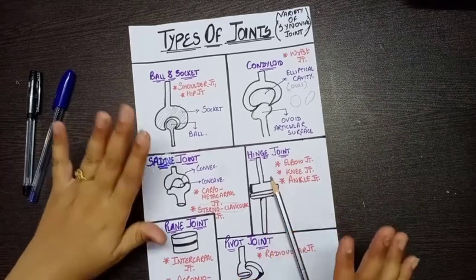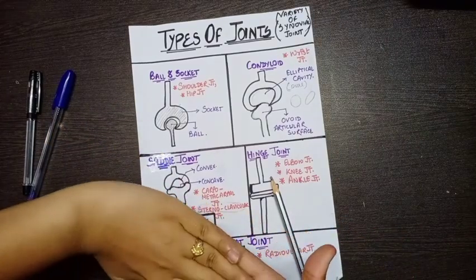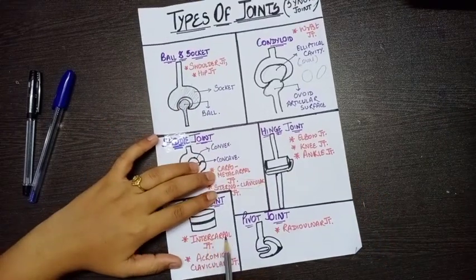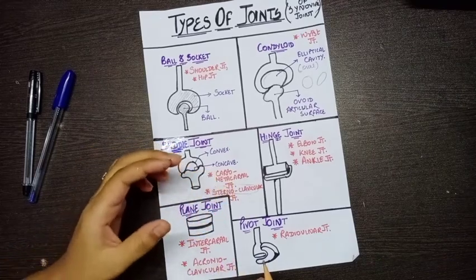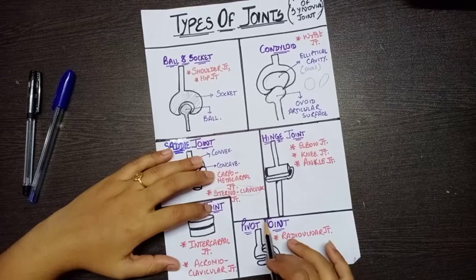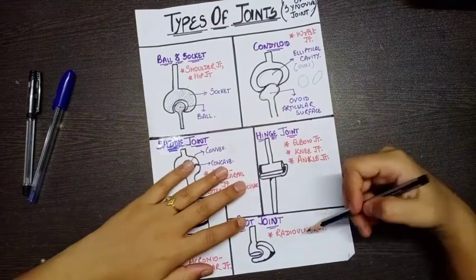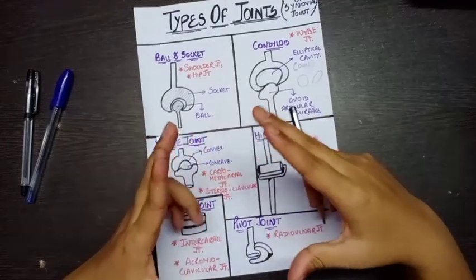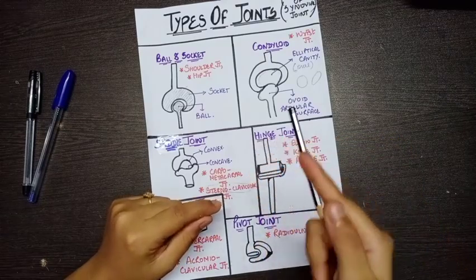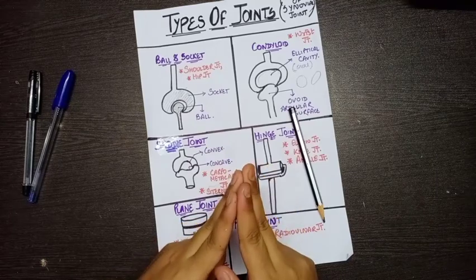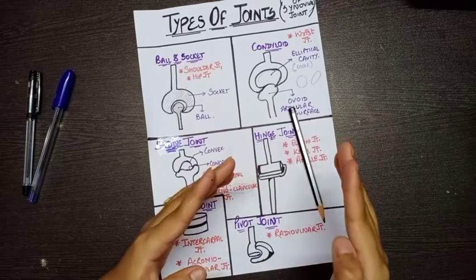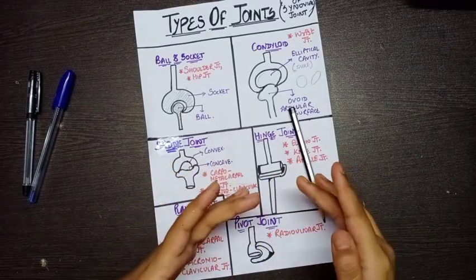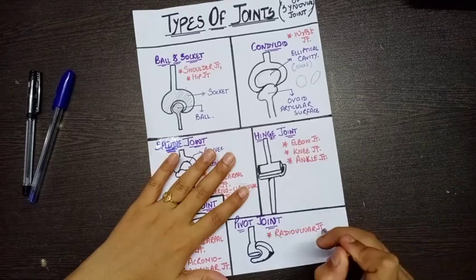Plane joints can have only two types of motion: gliding (sliding) and a little bit of rotation. Examples are your intercarpal joints — the joints between the carpal bones — and your acromioclavicular joint between the acromion process and the clavicle. For the pivot joint, an example is the radio-ulnar joint. In the radial notch of the ulna, the radius head is attached, and the only motion is rotatory, occurring in one axis.